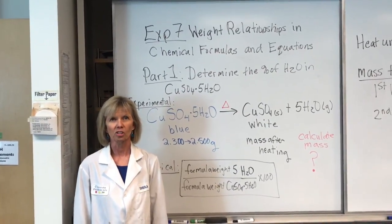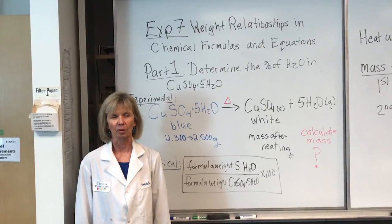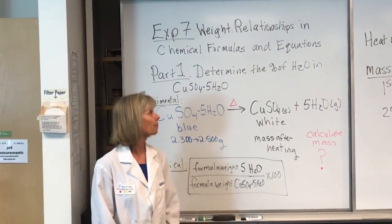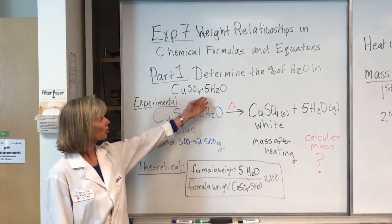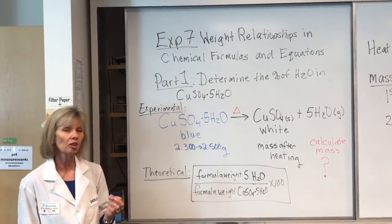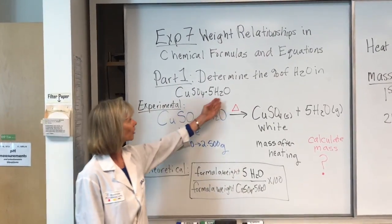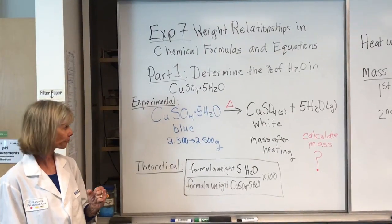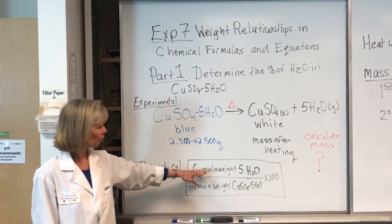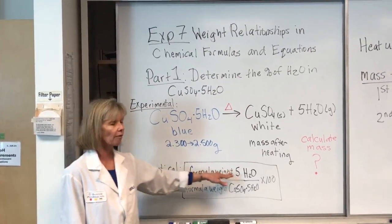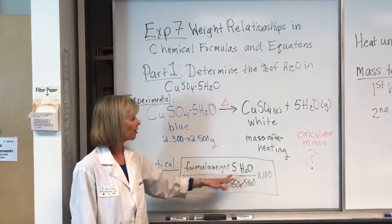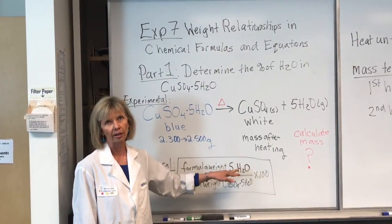Today's experiment is on weight relationships in formulas and chemical equations. The first part we're going to do in this lab is look at copper sulfate pentahydrate. We're going to determine the percent of water in this hydrated compound. We can figure that out in theory by using the formula weight of five water molecules divided by the formula weight of the total compound, then multiplying by 100 to get the percent.